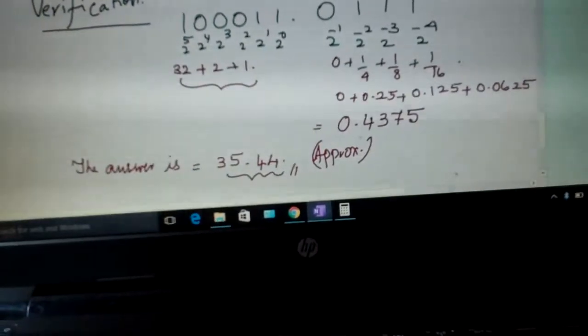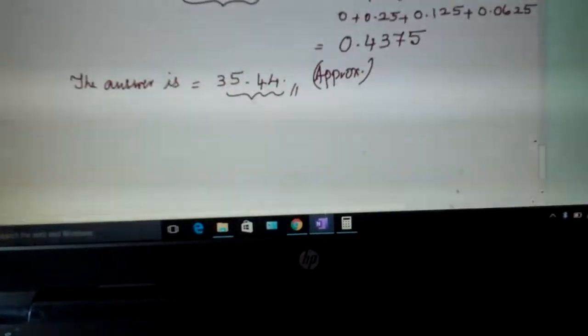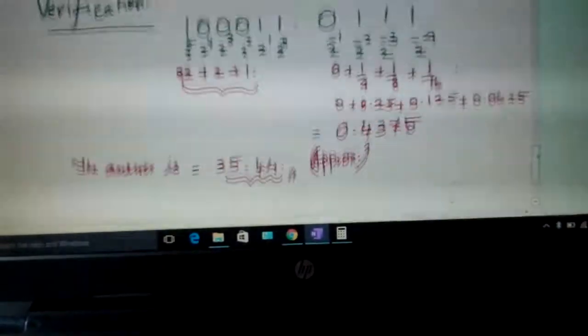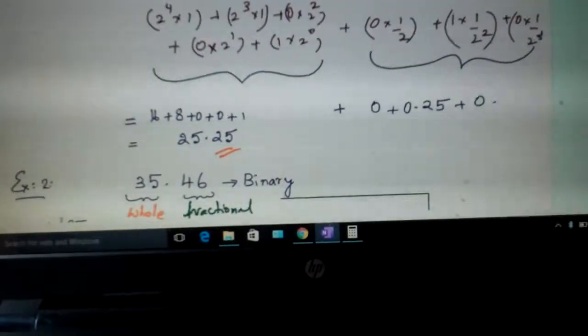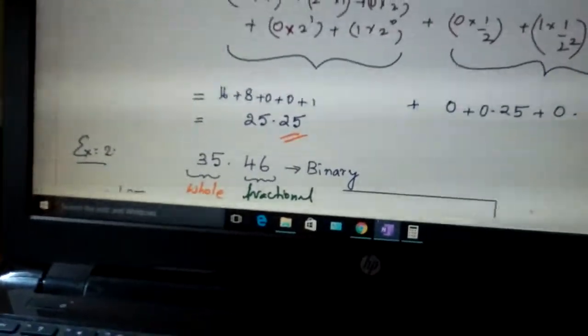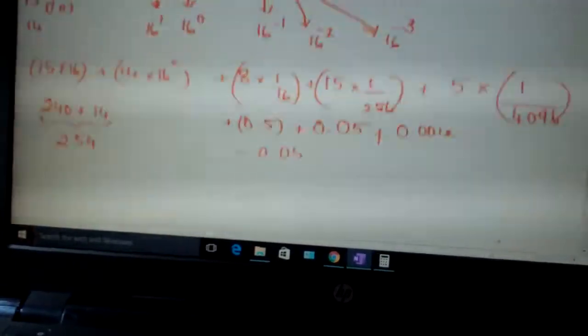This is -1, -2, -3, -4. After simplification you get something like this. So nearly 35.44. What was given to you was 35.46. So this is how you will be converting it.